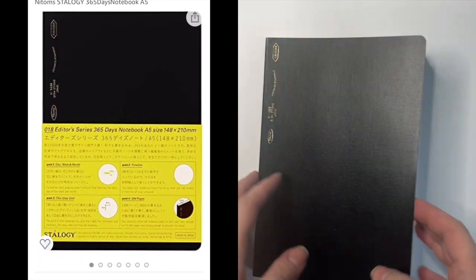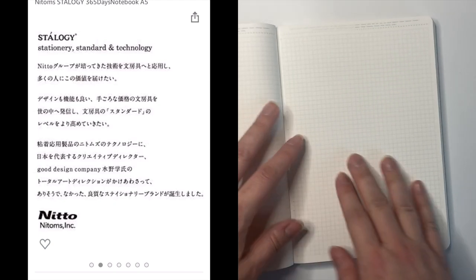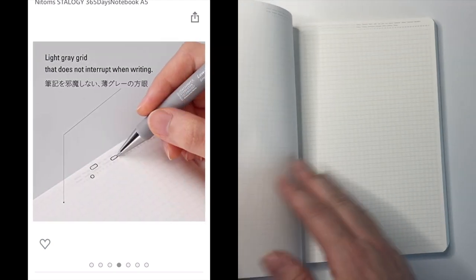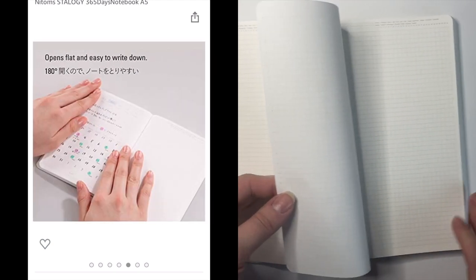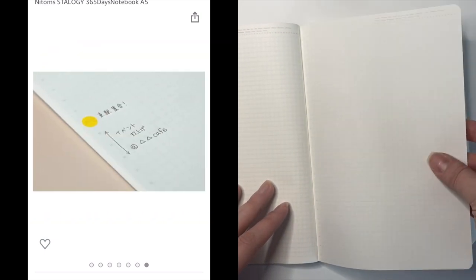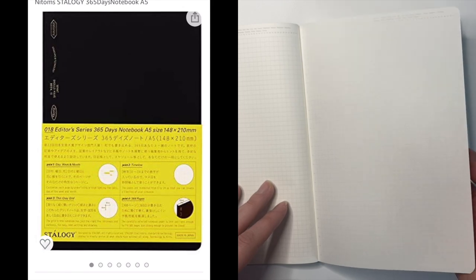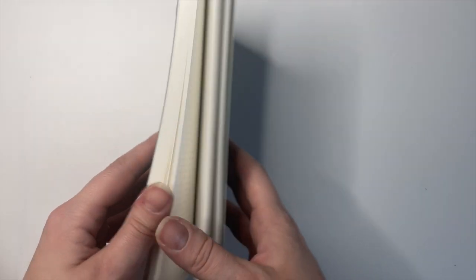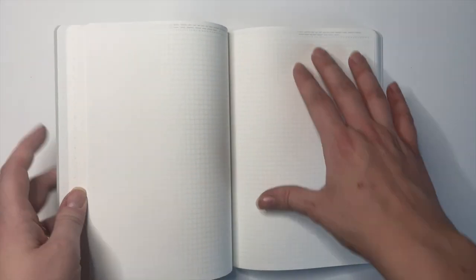And this has really thin paper, not quite as thin as a Tomoe River paper, but still pretty thin. And I think it's uncoated. I don't think it's coated like Tomoe River. This actually has 365 pages in it. And I mean, they consider a page to be like this side is one page, and this side is two pages. But the idea is that you could write one page for every day of the year.